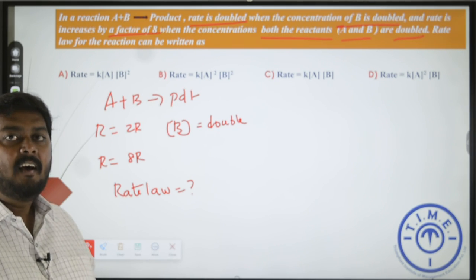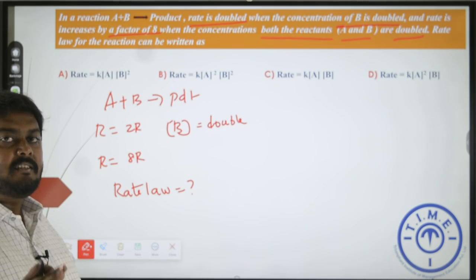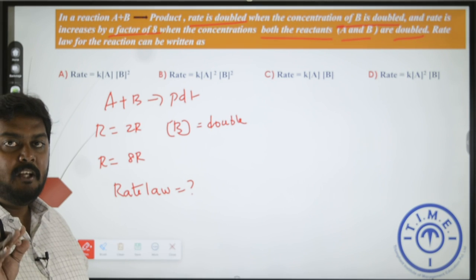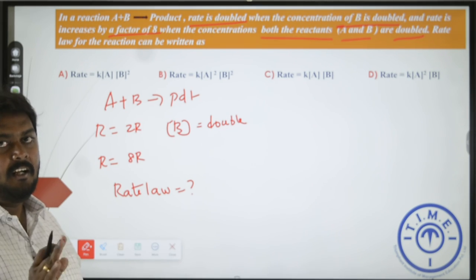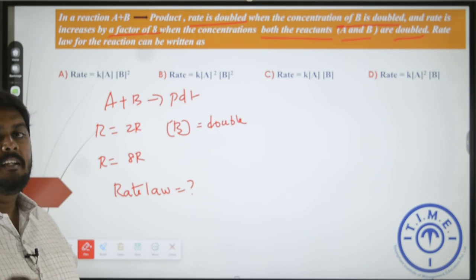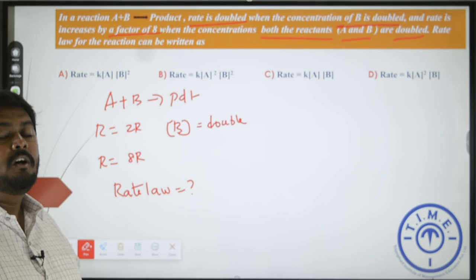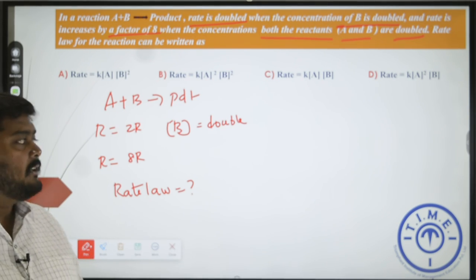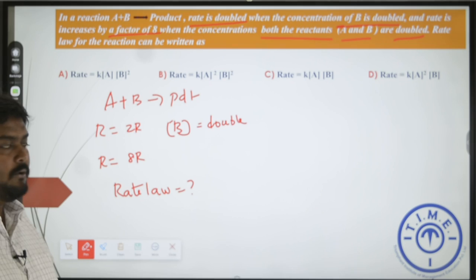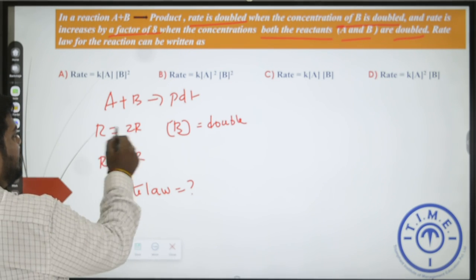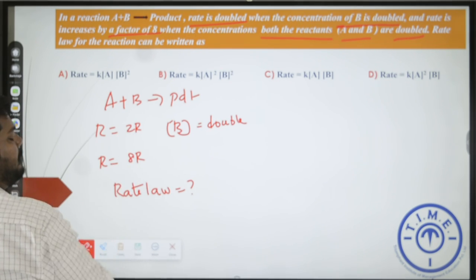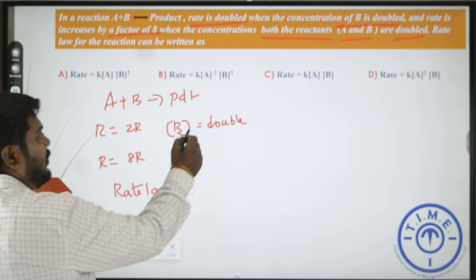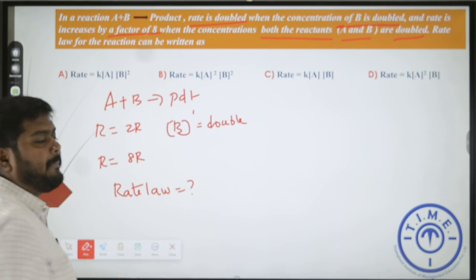Given data: when the concentration of B alone is doubled, rate becomes doubled. When B is doubled and rate doubles, this means concentration of B to the power 1.